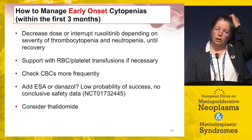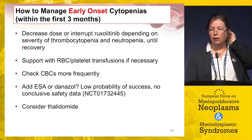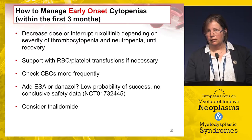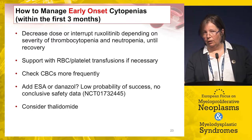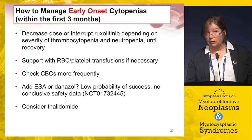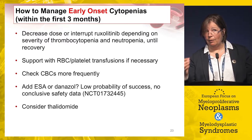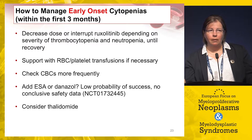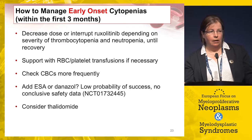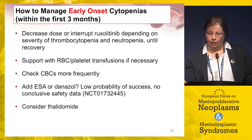Concerning on-target effects of ruxolitinib: early-onset cytopenias are to be expected and often resolve towards baseline after the first three months. I generally don't taper or change the dose for anemia — my plan is to support with transfusion and consider adding ESA, Danazole, or Thalidomide. The only time I would reduce the dose is for severe thrombocytopenia or neutropenia, which are much rarer.